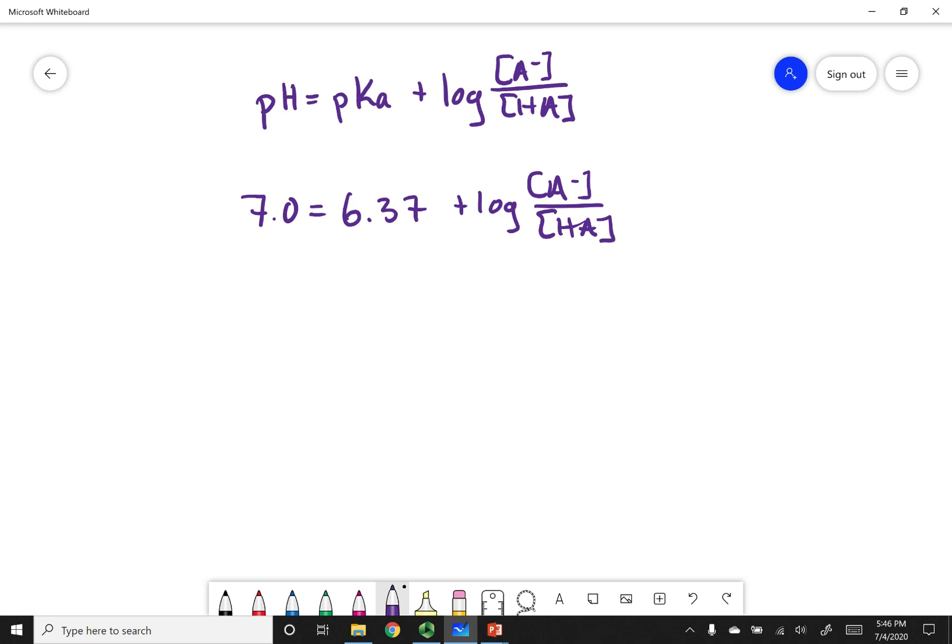So now what I can do is I can go ahead and subtract both sides with 6.37. So I get 0.63 equals the log of A minus over HA. I can take the anti-log of both sides. And what I end up with is 4.27 and A minus over HA.